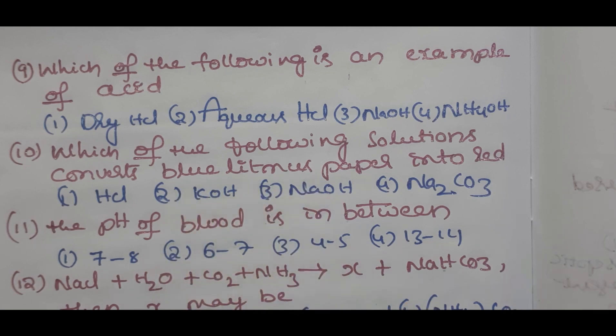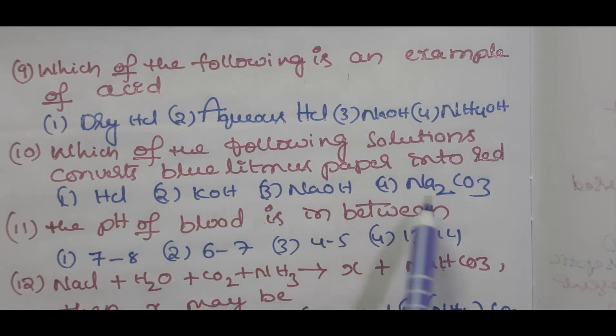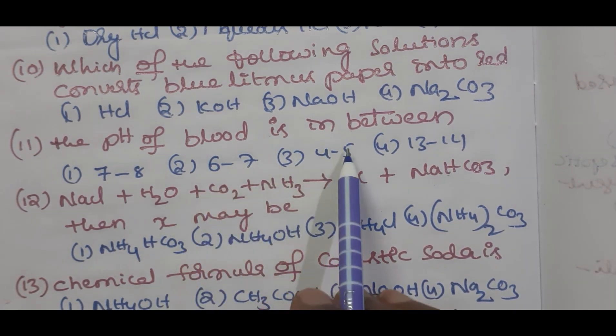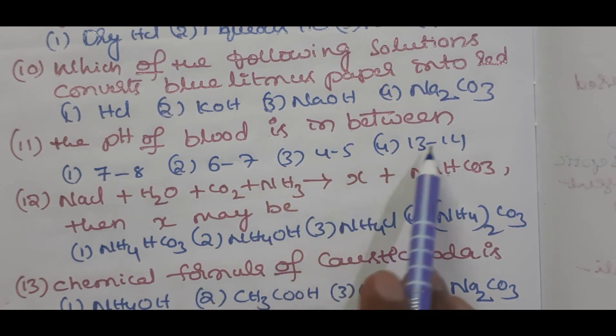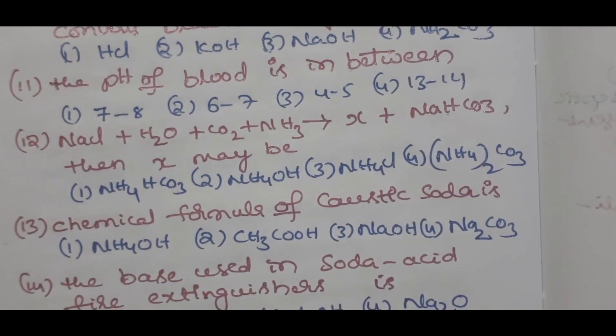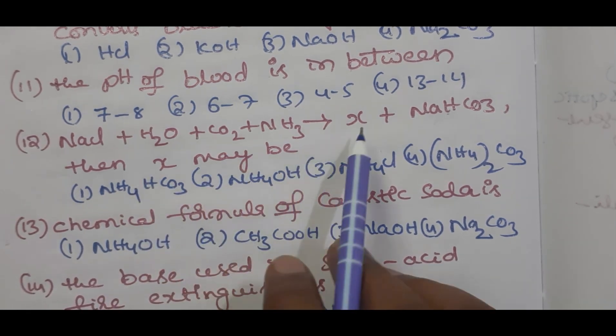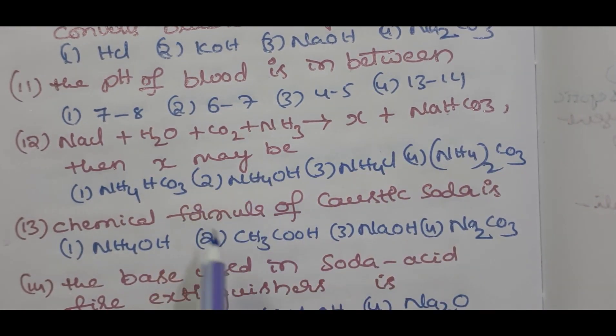Question number 11: the pH of blood is in between 7 to 8, 6 to 7, 4 to 5, 13 to 14. Question number 12 students: NaCl + H2O + CO2 + NH3 gives rise to X + NaHCO3, then what is the X? Option one NH4HCO3, NH4OH, NH4Cl, (NH4)2CO3.